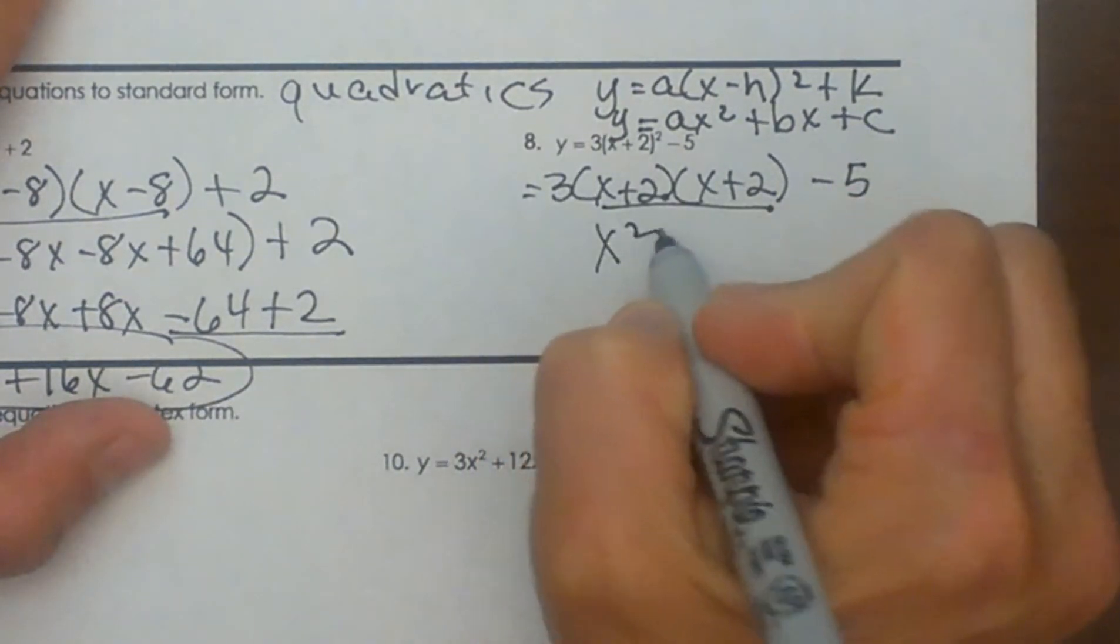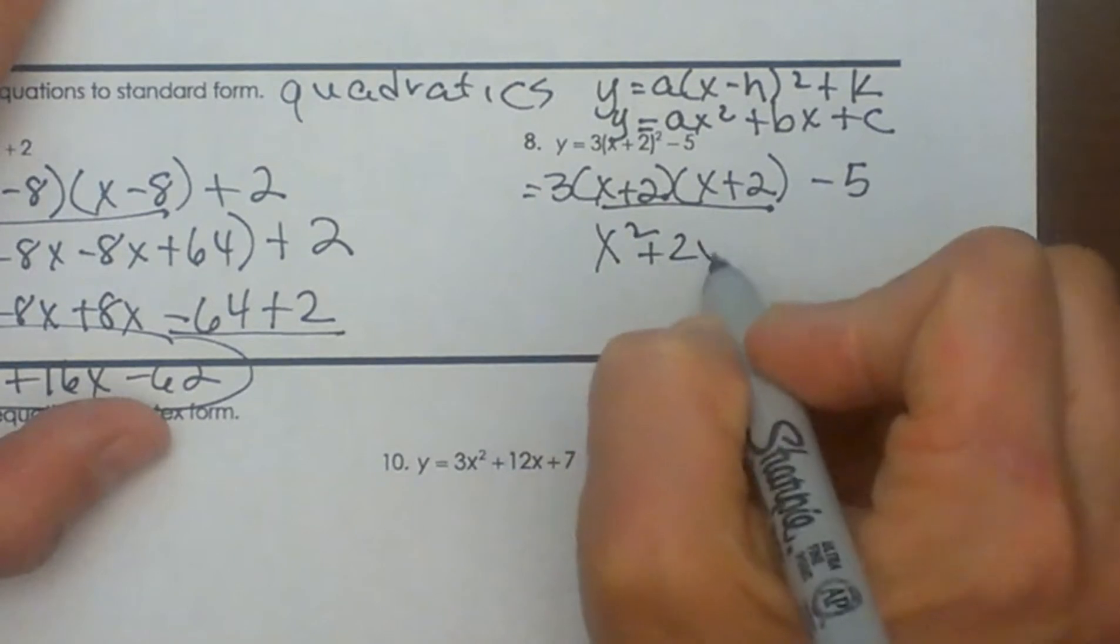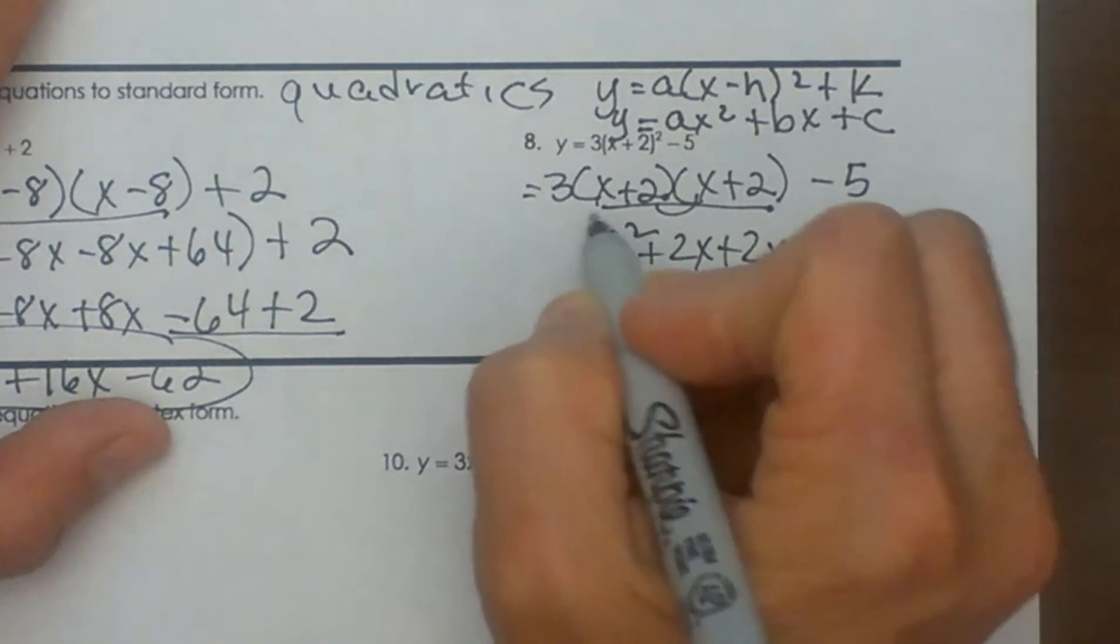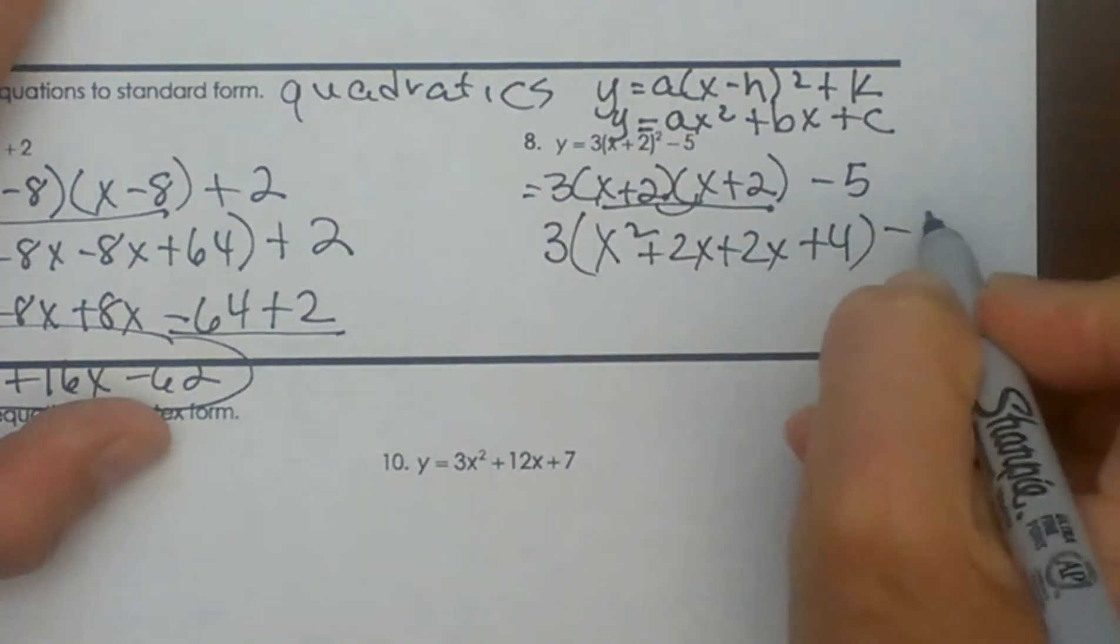So let's do first, outer, inner, and last. Then I'm going to bring the 3 down and bring the -5 down.